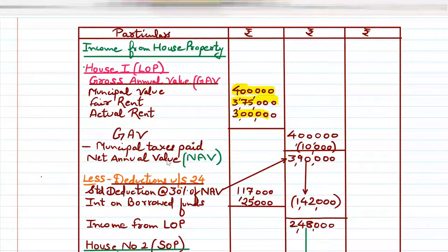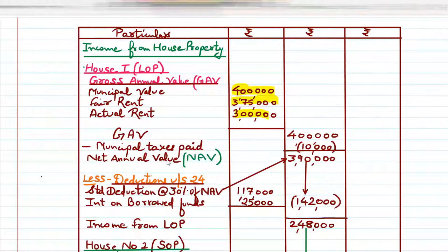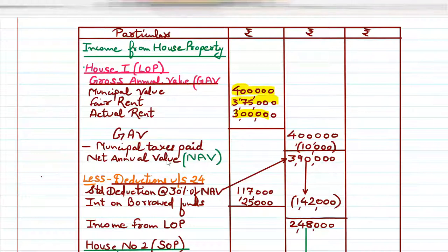To recap: GAV is calculated from municipal value, fair rent, and actual rent — the highest of the three. GAV minus municipal taxes paid gives NAV, which stands for net annual value. Then we apply less deductions under section 24. There are two deductions for LOP.